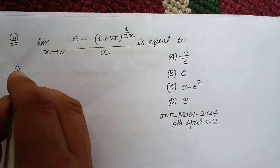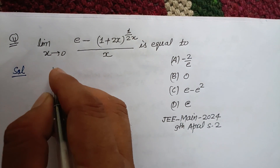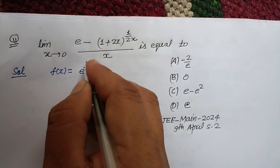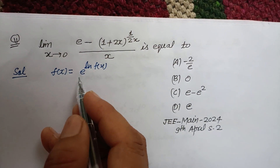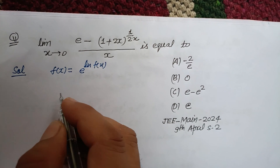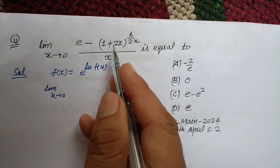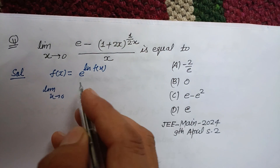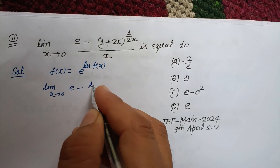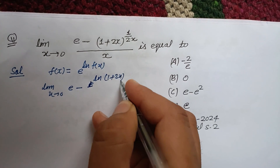This is a limit-based question. You know that f(x) can be written as e^(ln f(x)). So here we have the limit as x tends to 0, and we write the function as e raised to the power ln of (1 + 2x)^(1/2x).